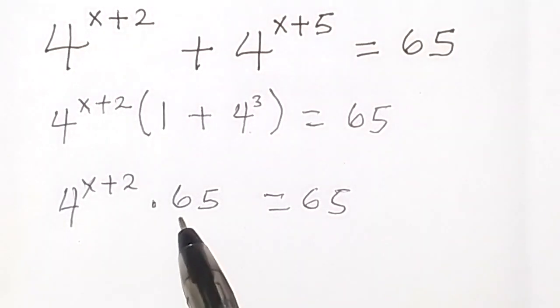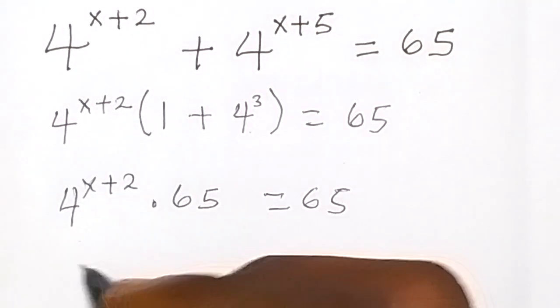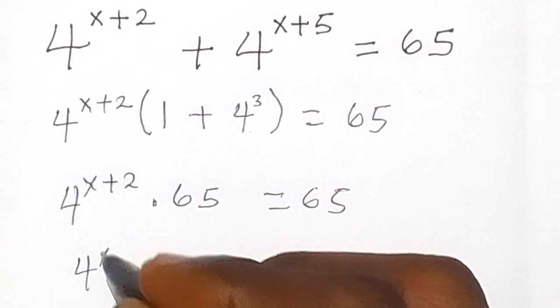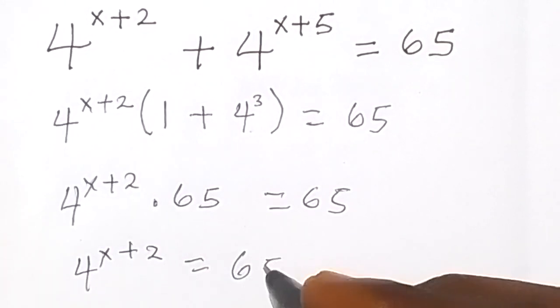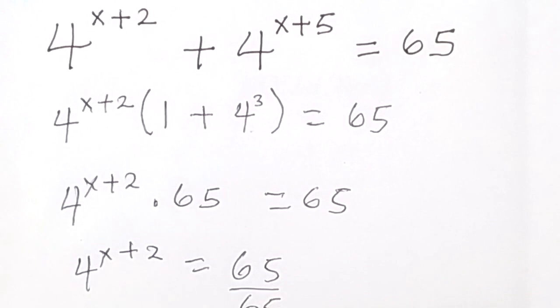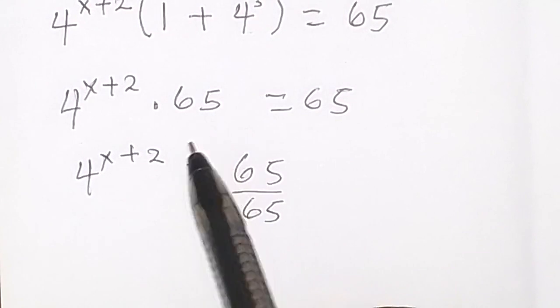From here now, we can see that we can divide both sides by 65. So we now have 4 raised to power x plus 2 equals to 65 divided by 65. We divide both sides by 65.